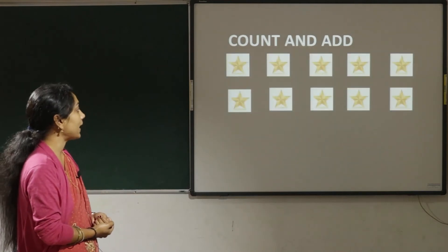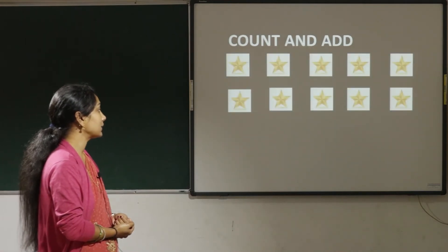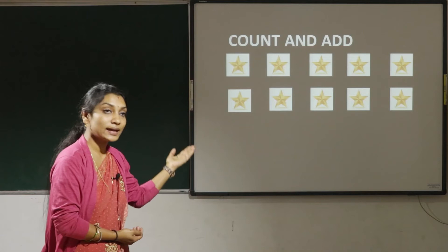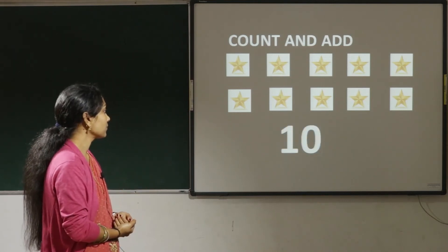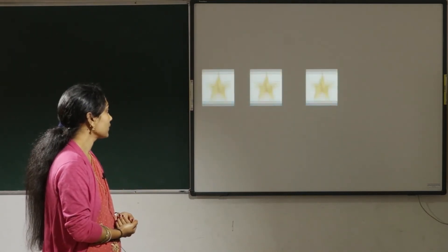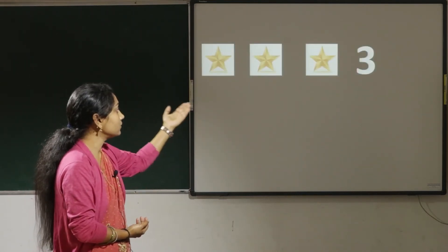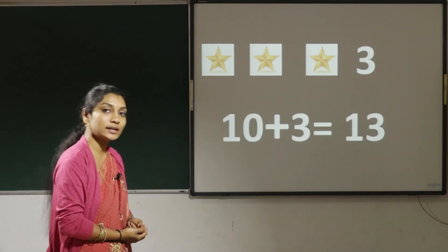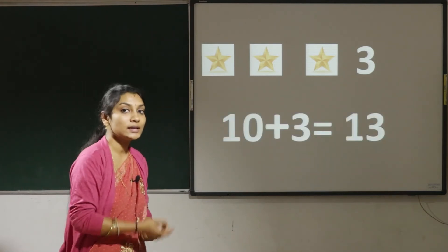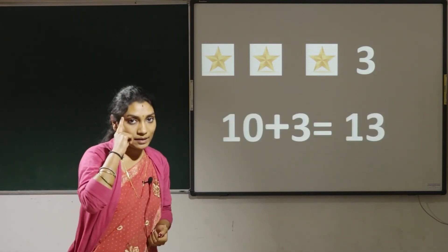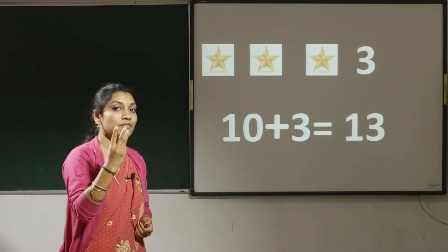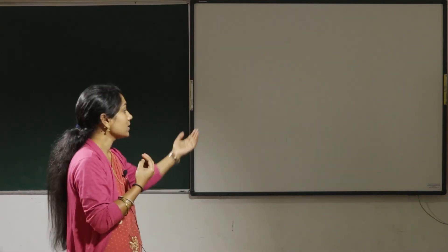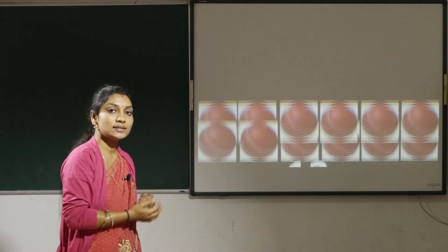Now count and add. Here there are 10 stars. Let us add 3 more stars to that. So 10 plus 3, how much children? 10 in the mind, 3 in the hand. After 10: 11, 12, 13. The answer is 13.